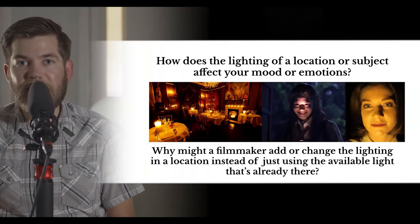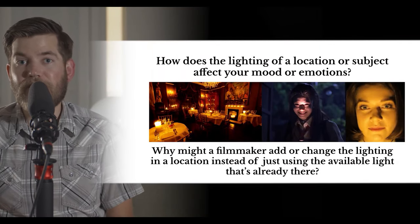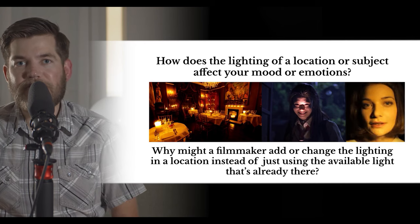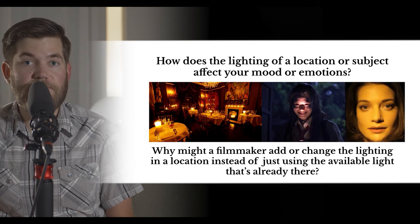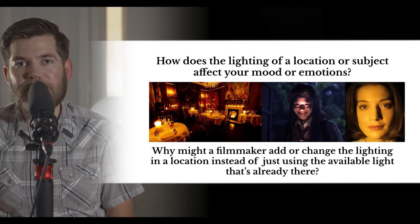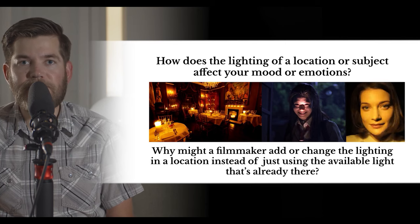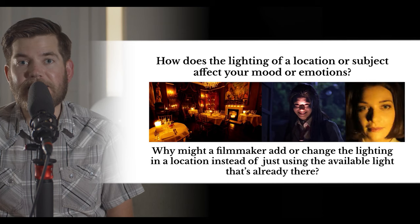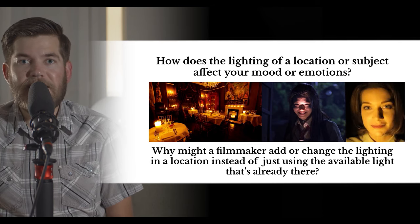My first question for today's lesson is one that anyone can answer even if you've never studied film: how does the lighting of a location or subject affect mood or emotion? Think of places you've been outside of your home. How does the lighting of each unique place affect your mood? Can you think of a place where the lighting is romantic, or makes you feel calm, or energized?